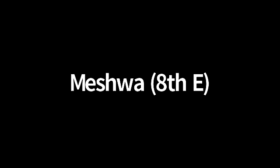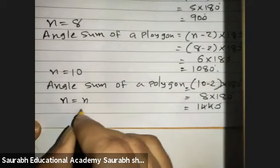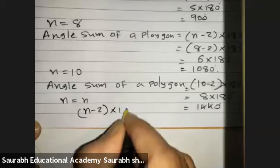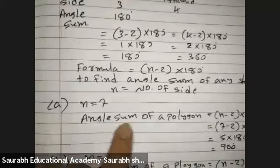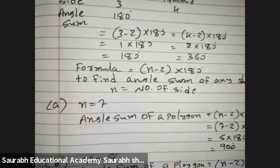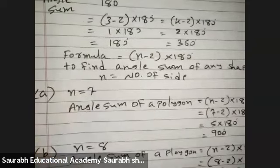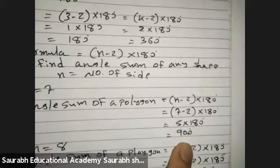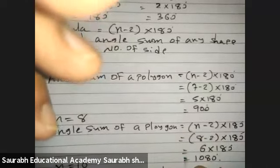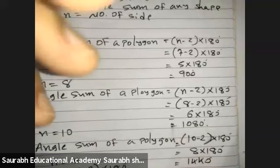So the formula is N minus 2 into 180. Once again: the formula to find angle sum property is N minus 2 in bracket, into 180. So for N equals 7, 8, and 10: angle sums are 900, 1080, and 1440 respectively. Now, next question number 5.